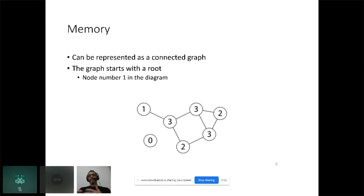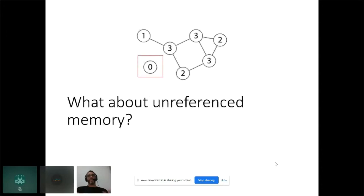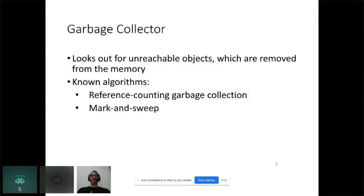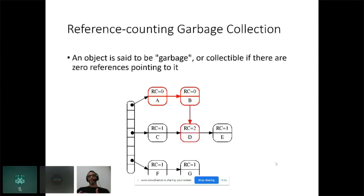You can think of memory like a connected graph. There is a root node, and the graph extends from that root with references connecting one memory object to another. An unreferenced node — like node zero in this example — is where garbage collectors come in. A garbage collector is software that looks for unreachable objects and removes them from memory, freeing that memory for the operating system to allocate later. There are two main garbage collection algorithms: reference counting and mark-and-sweep.